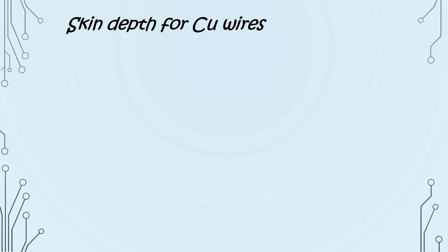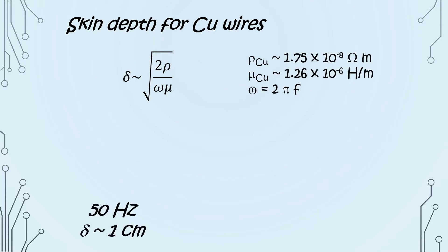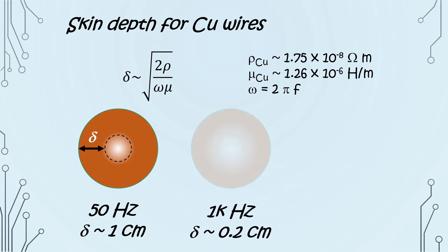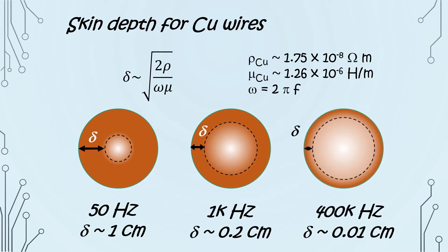To get a better idea of how big is the skin effect, we can calculate the skin depth for a copper wire. At 50 Hz, skin depth is about 1 cm, but if we increase to 1000 Hz, skin depth decreases to about 0.2 cm. It is further reduced to about 0.01 cm at 400,000 Hz.